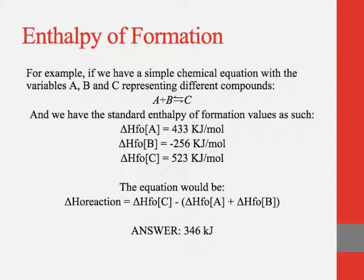Okay, for example, if we have a simple chemical equation with the variables A, B, and C representing different compounds. So A plus B yields C. And we have the standard enthalpy of formation values. These are either given in the appendix of the book or they're given to you on a sheet of paper if it's an exam. So the delta HF for A is 433 kilojoules per mole, the delta HF of B is negative 256 kilojoules, and the delta HF of C is 523 kilojoules.